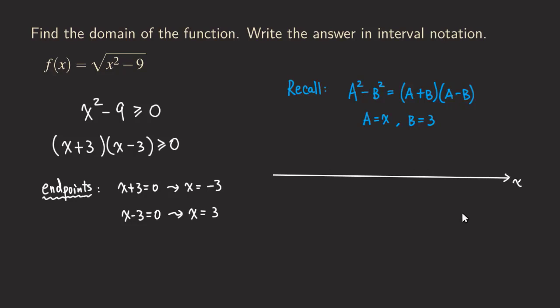This is the x-axis, the horizontal axis. And then now we are going to put those two endpoints on the number line. So we are going to put that negative 3 right here and then positive 3 here.